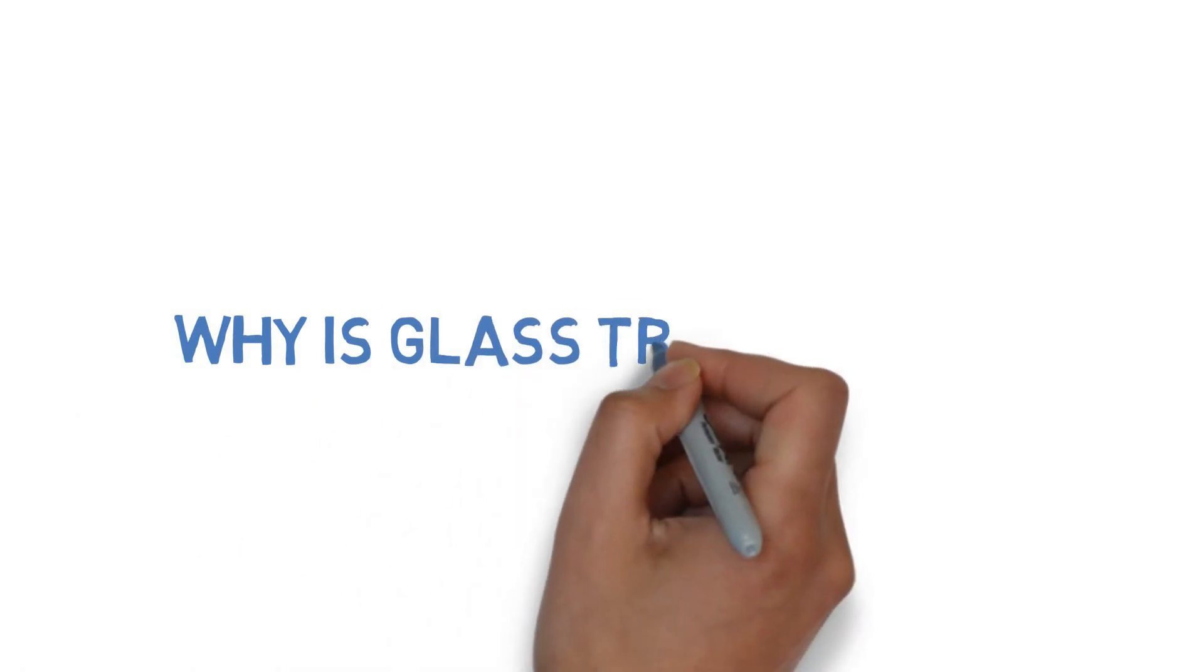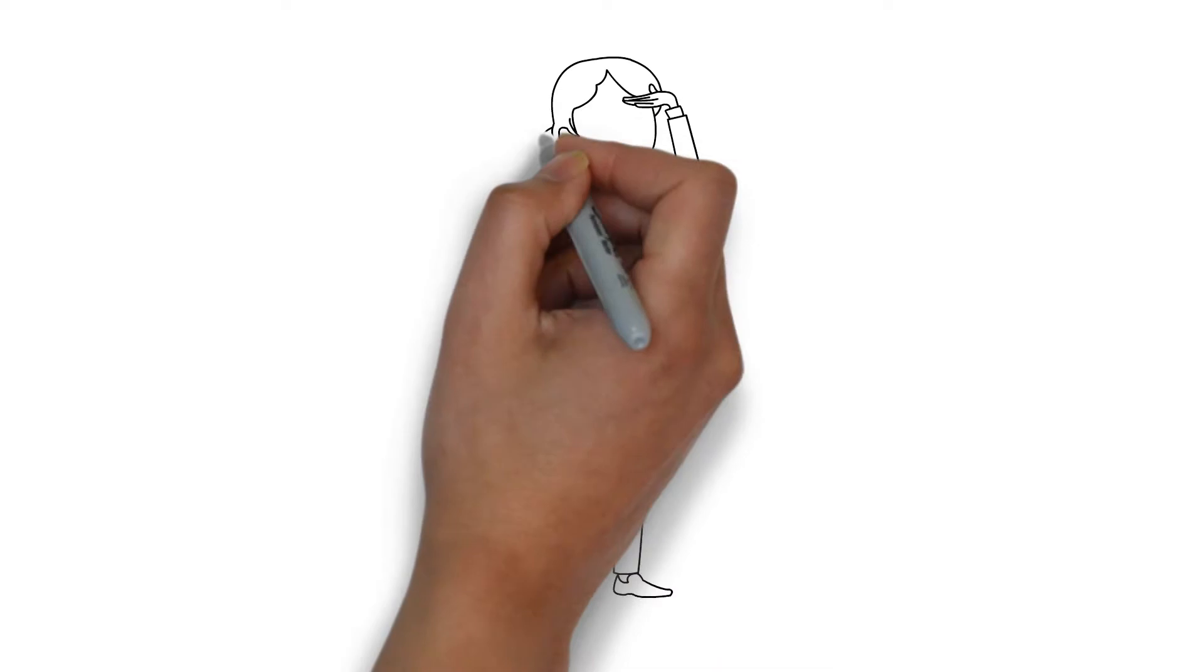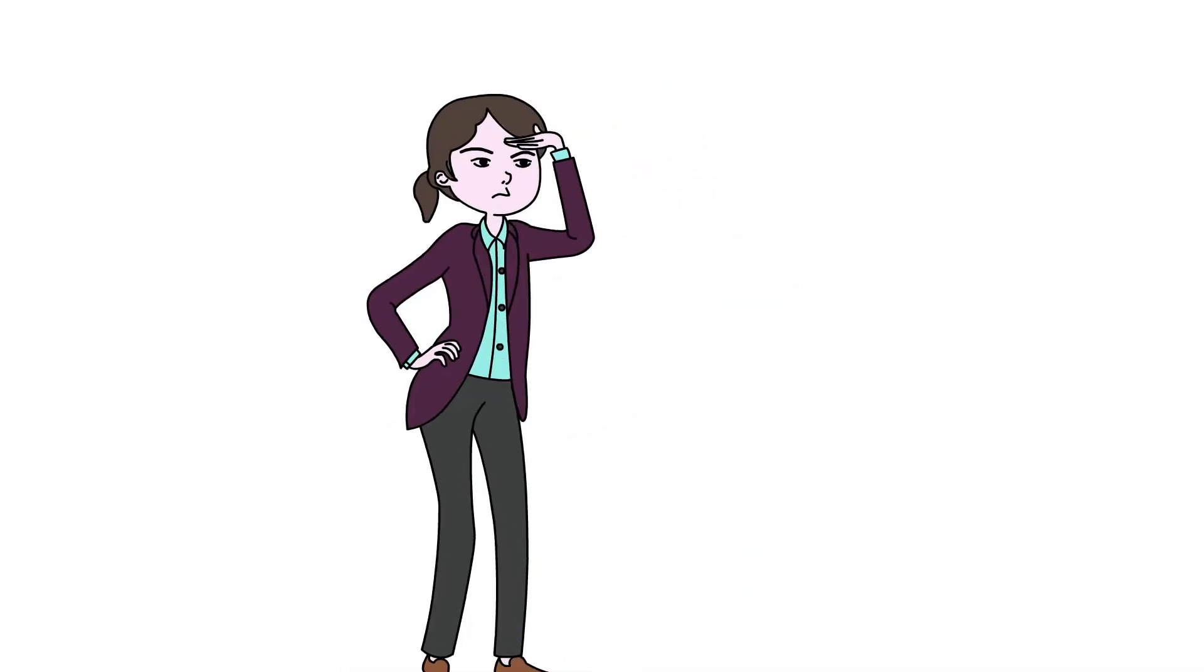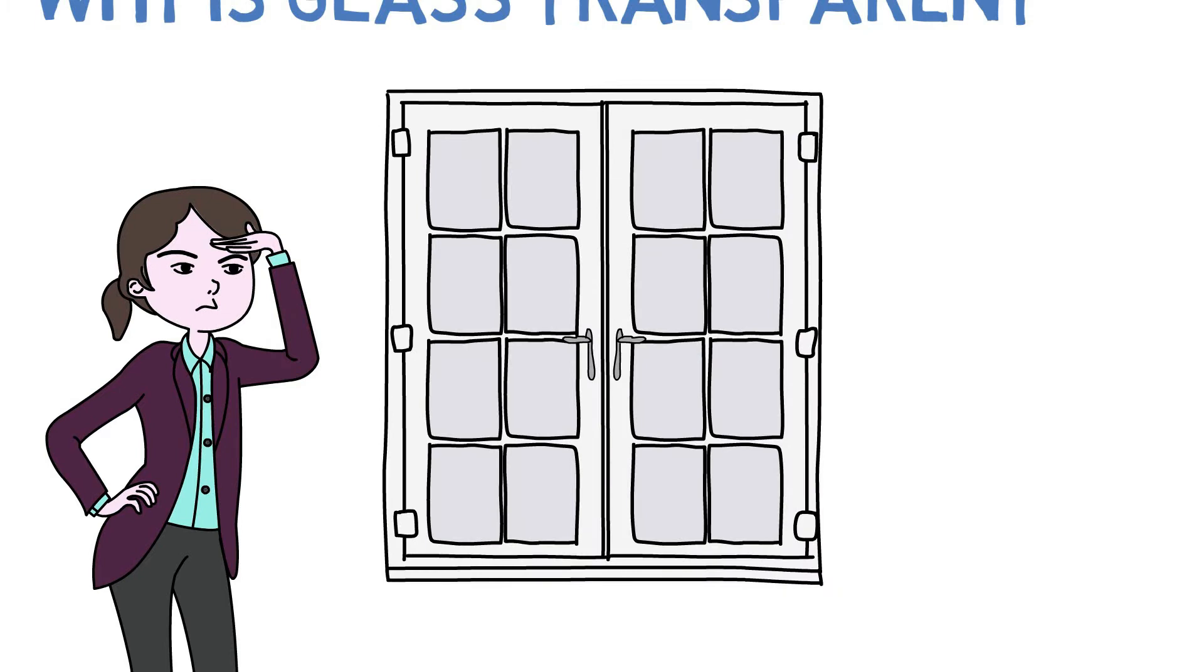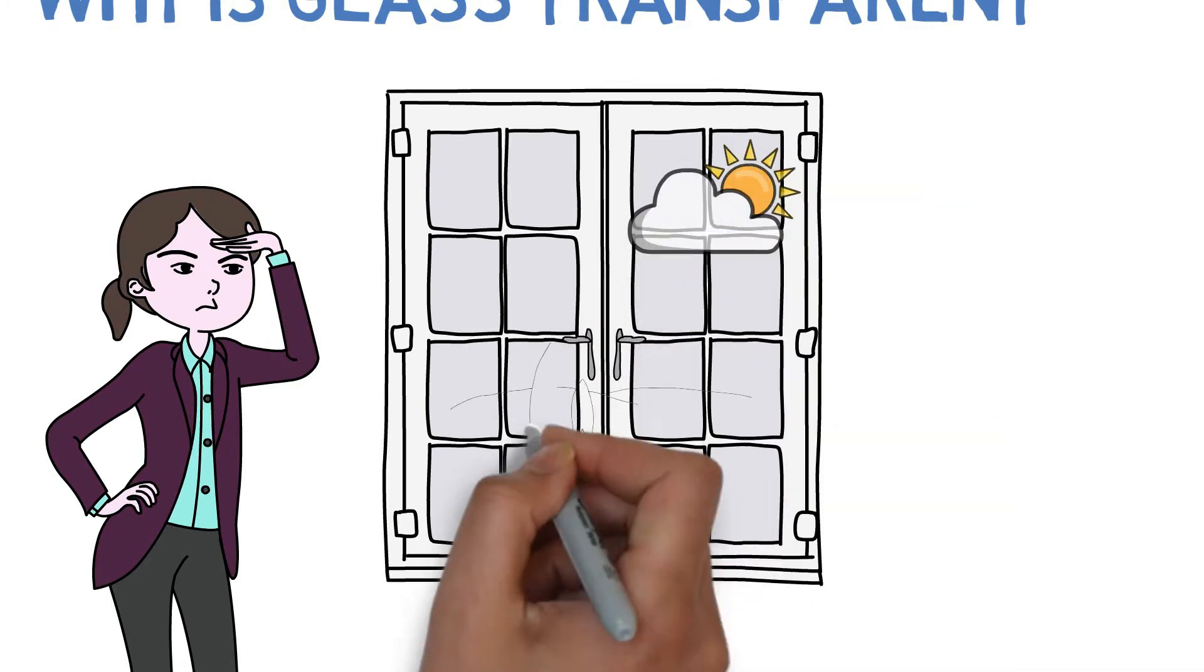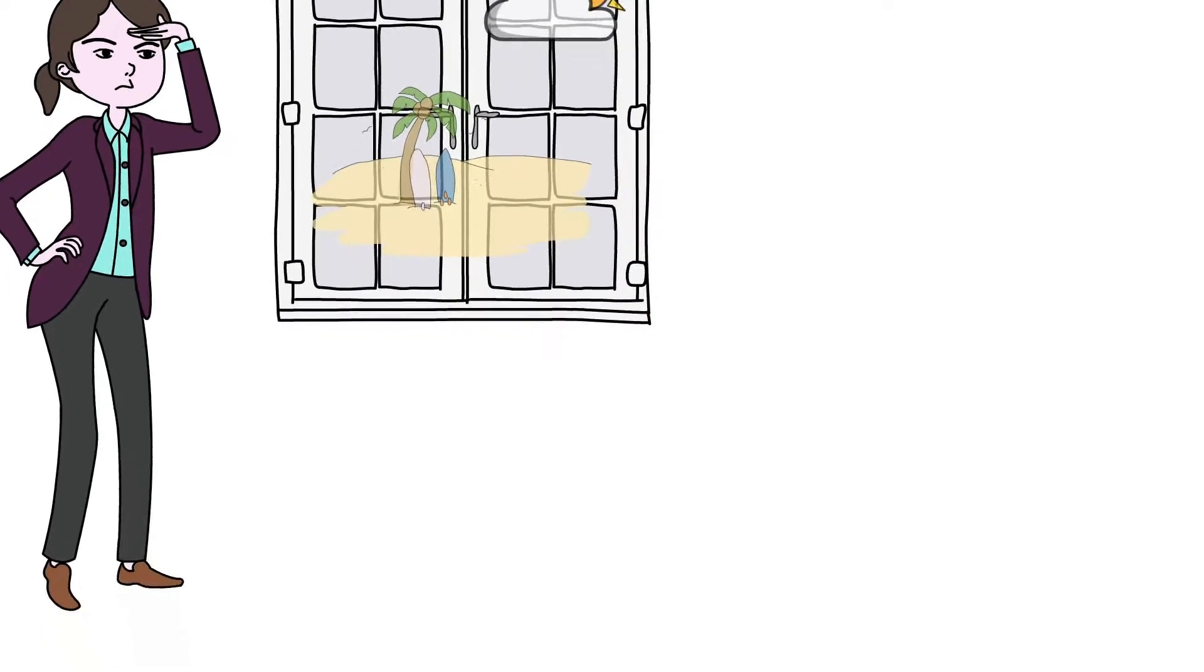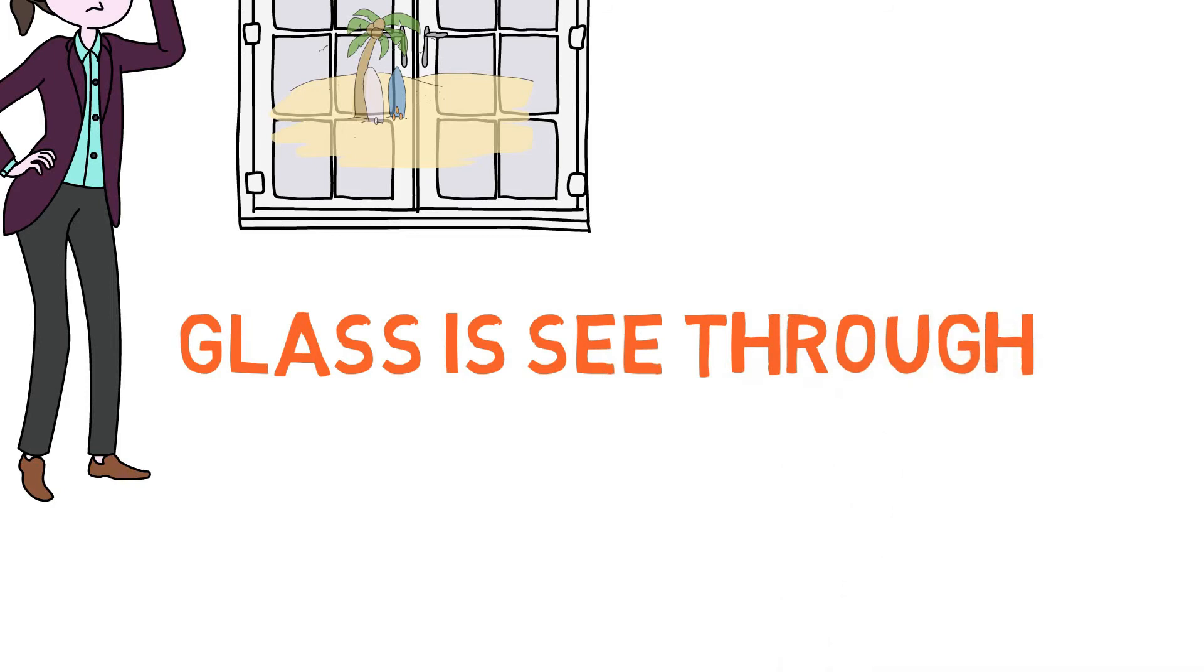Welcome to the MinuteScience channel. Have you ever wondered why is glass transparent? If you look outside a window, you can see the bright sunny day outside and it seems like the glass is not there, which means that glass is a special kind of solid that is see-through.